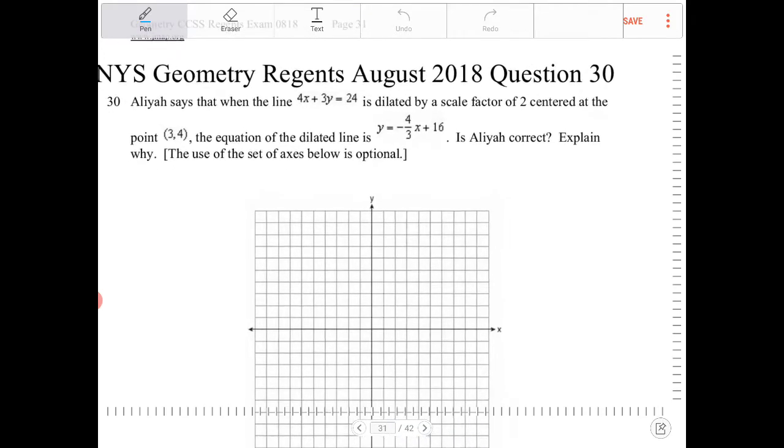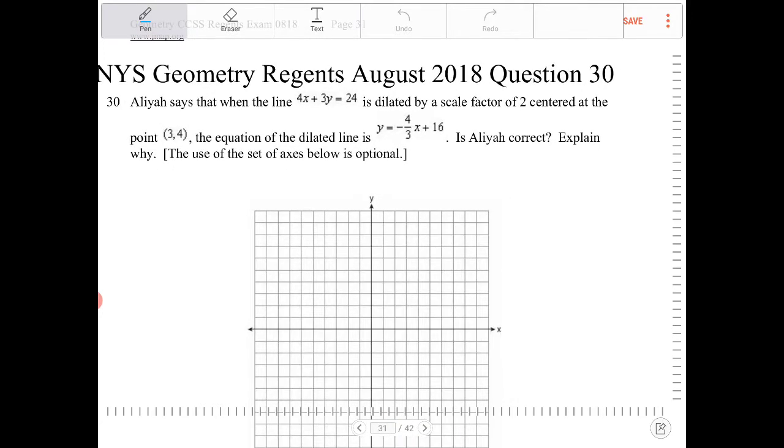So in order to do this, let's graph out 4x plus 3y equals 24. I will take 4x plus 3y equals 24 and isolate y. Subtract both sides by 4x, I get 3y equals negative 4x plus 24. Divide both sides by 3, I get y equals negative 4 thirds x plus 8.